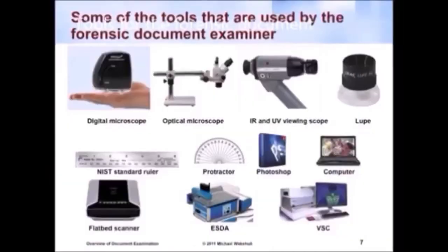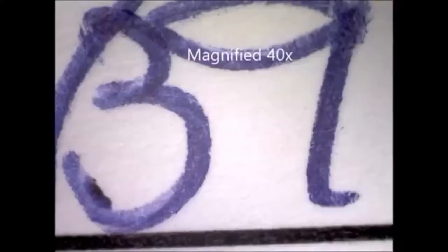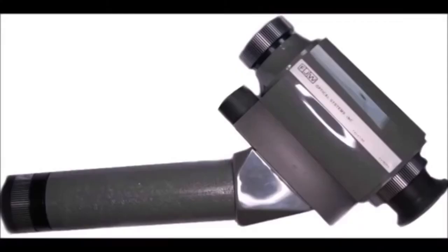Some of the tools used by document examiners include a digital microscope — for example, the MyScope from Zarbco in New Jersey — a very high-end digital microscope with many capabilities that allows you to hold it over a document and capture the image directly on the computer. We also use optical microscopes with a boom arm that allows you to hold the lens over the document for a better view. There are also IR and UV scopes to use ultraviolet and infrared light to examine documents.